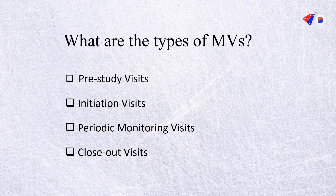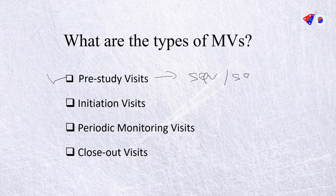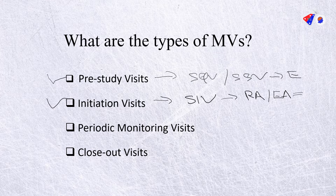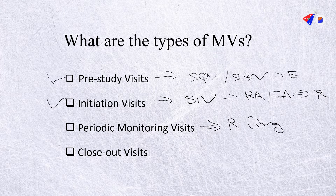We have seen the pre-study visit, which is also called the site qualification visit or site selection visit. Next, we have seen the initiation visit, which is called the SIV. Here we evaluated the site, received the regulatory approval and the EC approval, and the site can begin recruitment. Now in this stage, the site is recruiting and the trial is in progress.